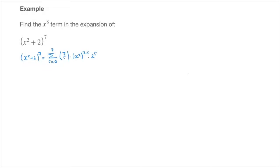The approach we take for finding the x to the power of 8 term is to determine the value of r at which the general term — which I'm underlining now — is an x to the power of 8 term. This general term I typically call t sub r, t as in term.